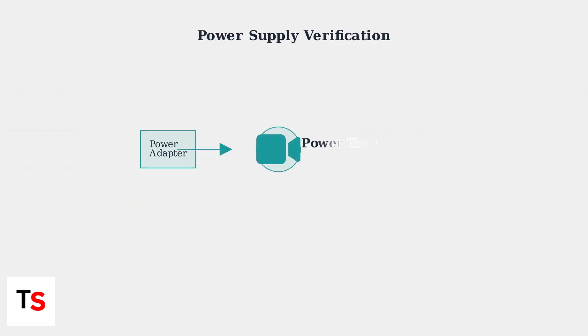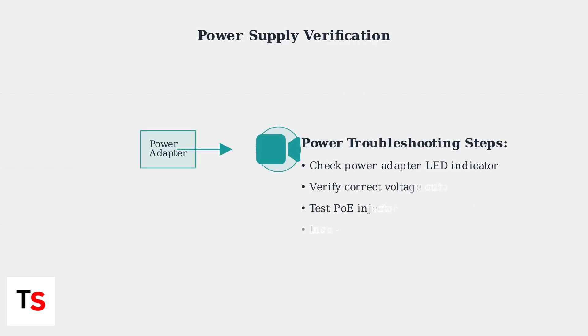Power issues are a major cause of video loss, accounting for approximately 85% of security camera problems. Confirm your camera is receiving sufficient power from a functioning power adapter or Power over Ethernet injector.